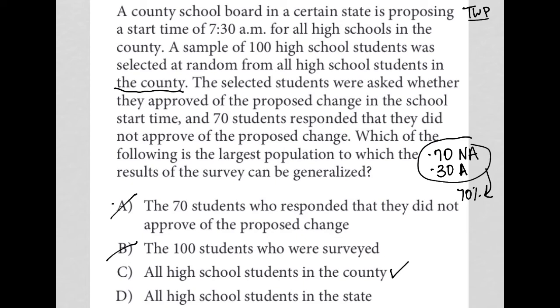Choice D: all high school students in the state. That's obviously a larger population than just the county. But it's not fair to say I'm only choosing students from this particular county — where the school start time is changing only in this county — and then apply their results to the entire state, even students who are not in the county and whose school time is not going to change. That's an overreach. For that reason, choice C is the best answer.